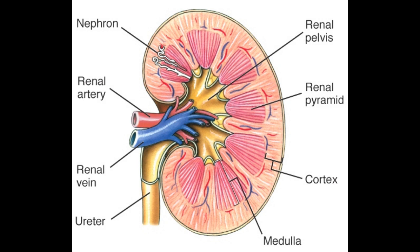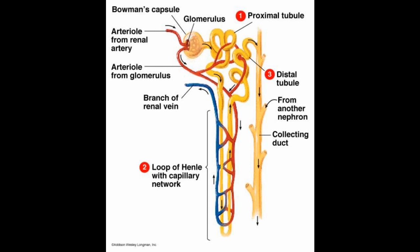Now we'll see the structure of the nephron. The nephron is the functional unit of the kidney where filtration of blood actually takes place. Each nephron has two main parts: the Malpighian body and the renal tubule. The Malpighian body is further divided into two parts — Bowman's capsule and glomerulus. The cup-shaped broader end of the nephron is called Bowman's capsule, and the bunch of fine blood capillaries present inside the Bowman's capsule are called the glomerulus. Together these two structures are called the Malpighian body.